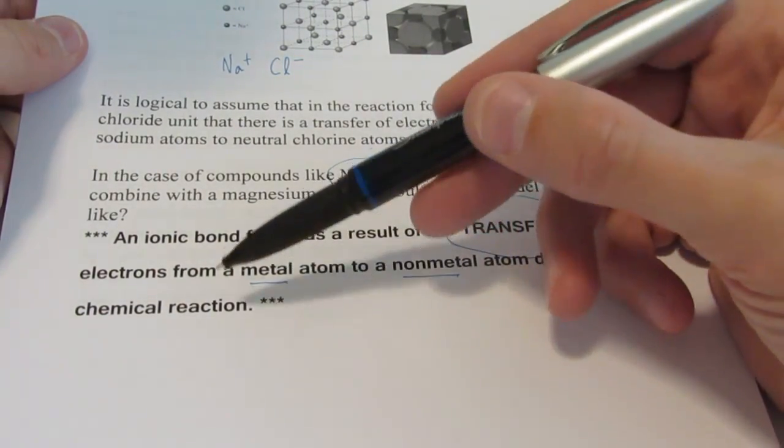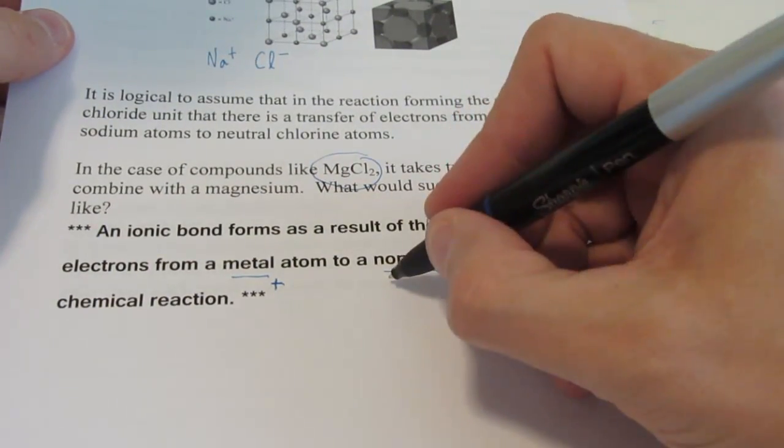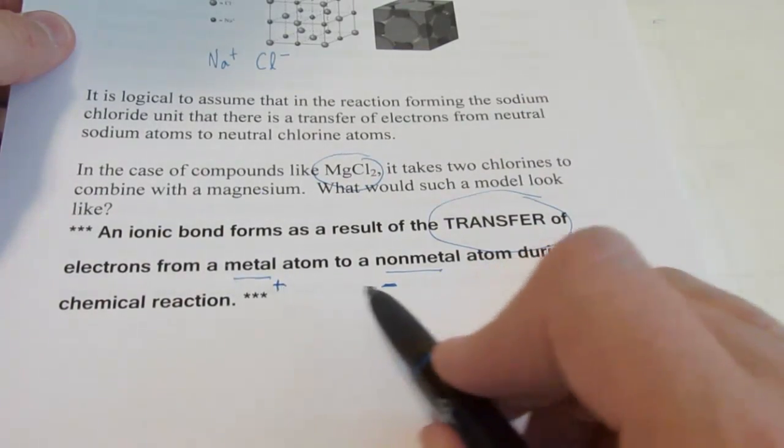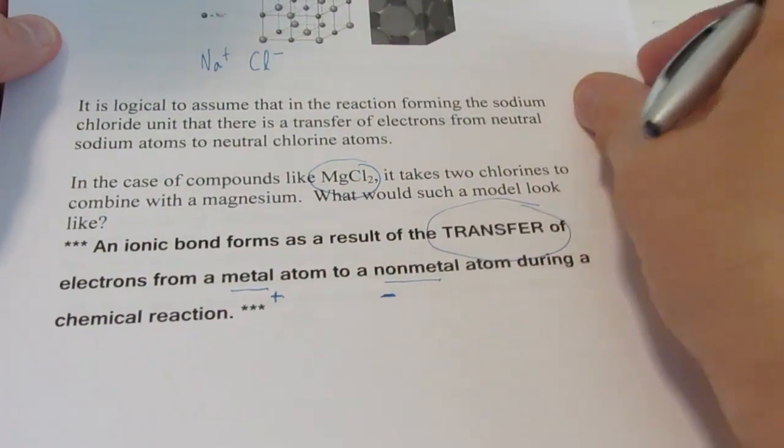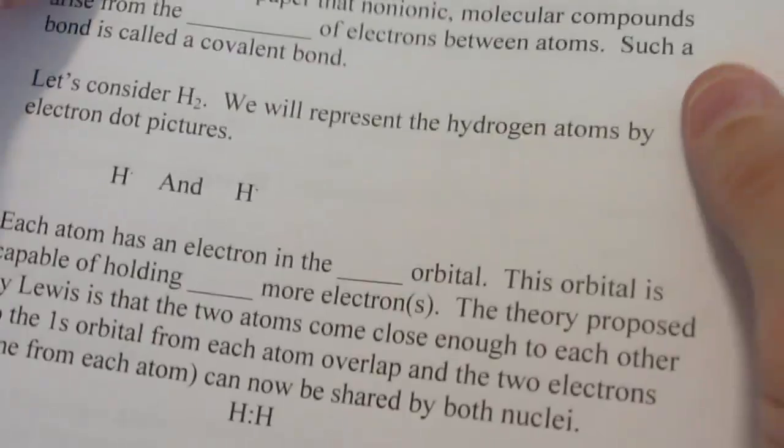In an ionic bond that forms as the result of the transfer of electrons from a metal atom to a non-metal atom during a chemical reaction. Metals tend to lose electrons and become positive ions. Non-metals tend to gain electrons and form negative ions. That positive and negative attraction is the basis for the ionic bond.